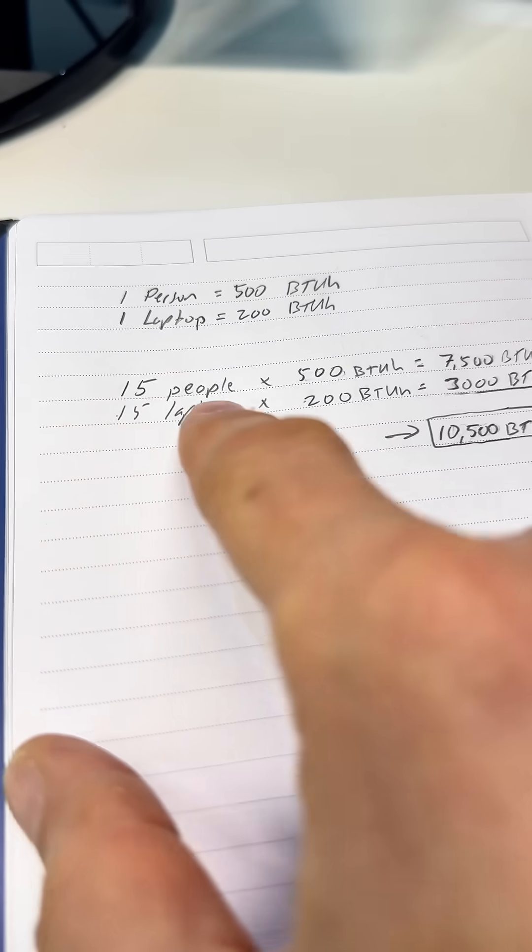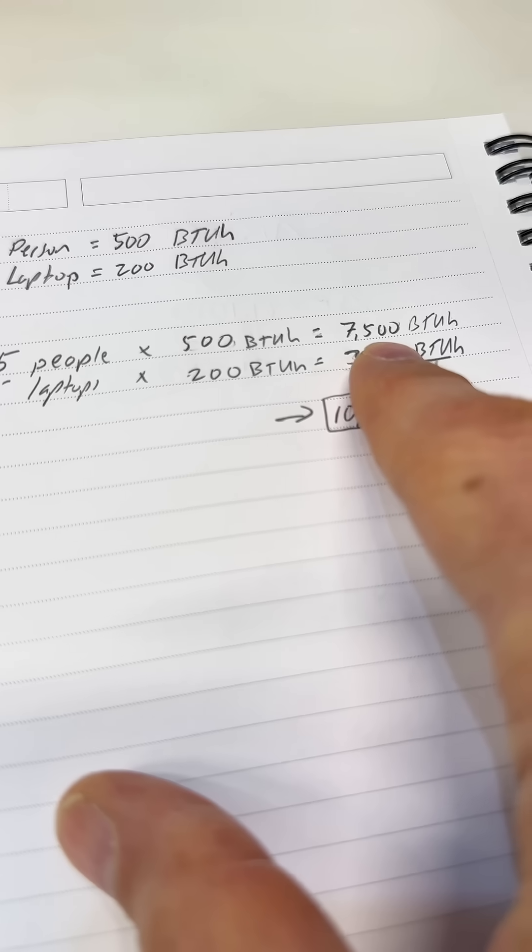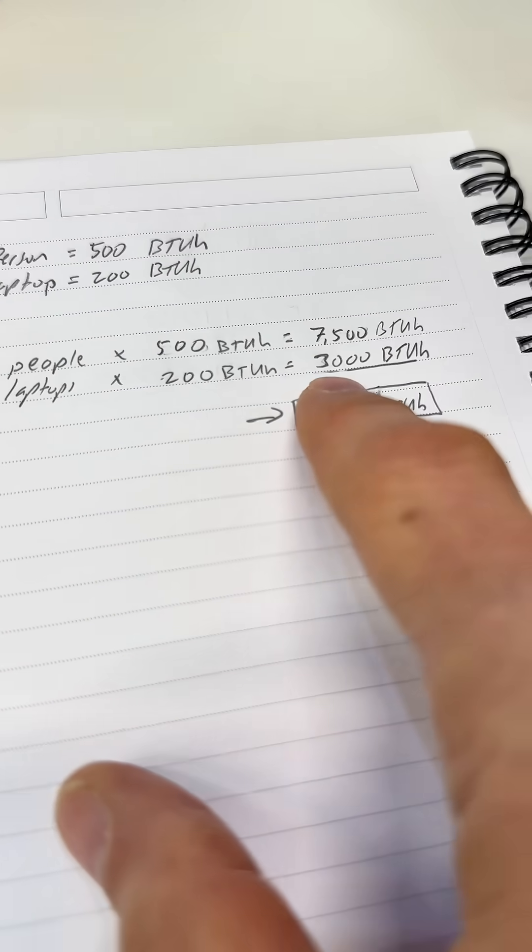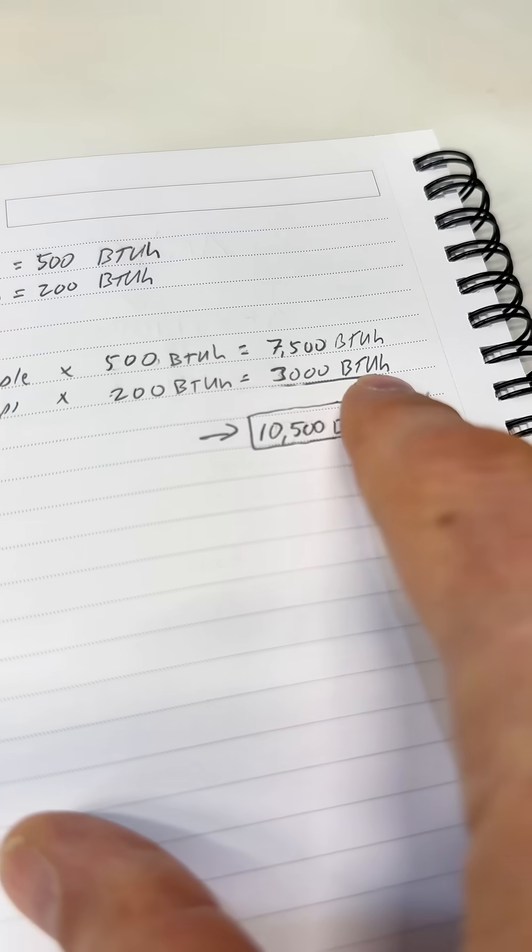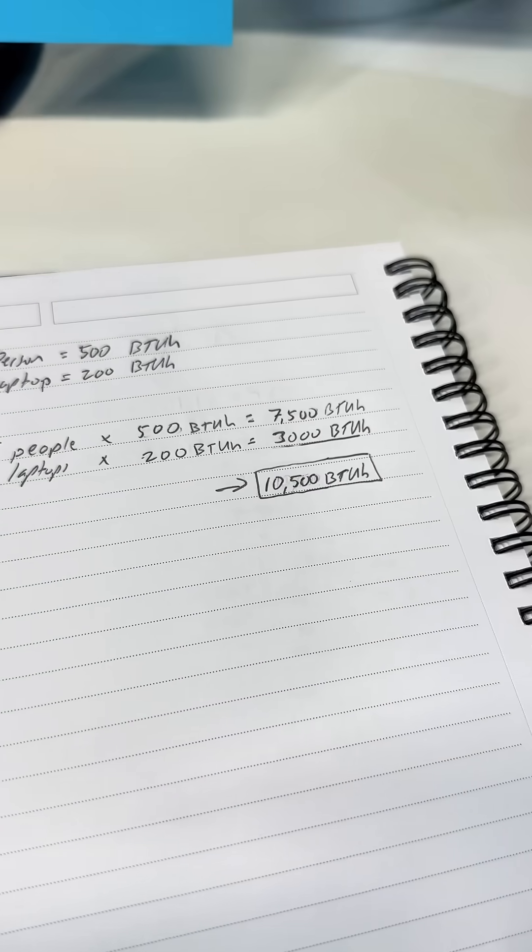So 15 people times 500 is 7,500 BTUs per hour. 15 laptops times 200 BTUs per hour is 3,000 BTUs per hour. You add that up, it's 10,500 BTUs per hour.